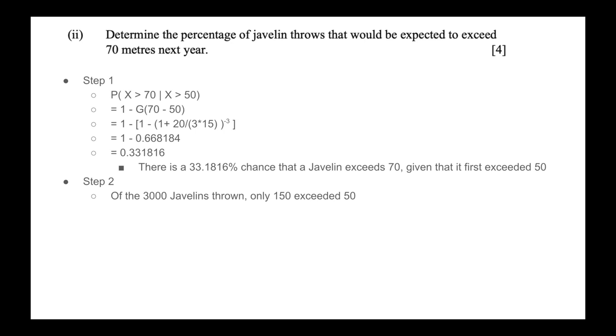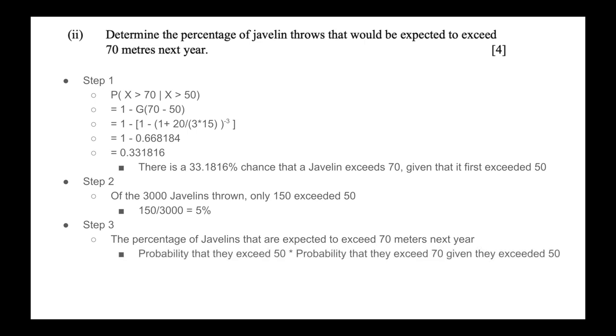Step two is to say of those 3000 javelins thrown, only 150 exceeded 50, and that is 5%. Now we can combine that 5% with that 33% to get our final answer. That is step three. So the percentage of javelins expected to exceed 70 meters next year is the probability they exceed 50, which is 5%, multiplied by the probability they exceed 70 given they exceeded 50, which we calculated earlier. That's our 33%. Taking 5% times 33%, we get our final answer of 1.6591%. And that answer sounds a lot better. Remember, it's an extreme event, so we're expecting the probability to be quite low.